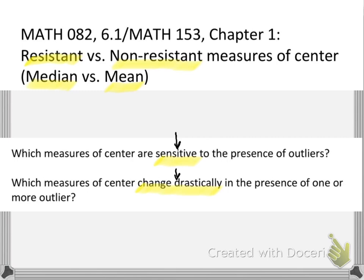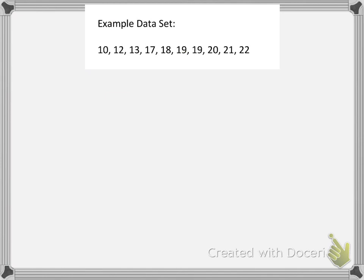Things that are sensitive, or things that will change drastically, are called non-resistant measures. And when we get to measures of spread, we'll find the same aspect — some resistant measures of spread and some non-resistant measures of spread. So let's get started. I made up a totally random data set — let's imagine these are the ages of some friends we have on Facebook.